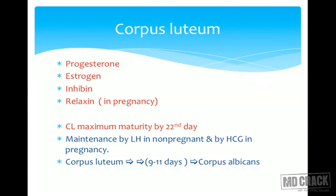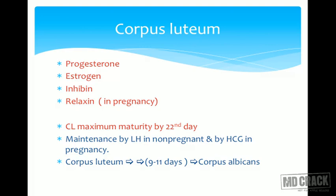The corpus luteum reaches maximum maturity by day 22 of a 28-day regular cycle — 7 to 9 days after ovulation, with the peak on day 22. The corpus luteum is maintained in the non-pregnant female by LH levels. If the female conceives, maintenance of the corpus luteum is by hCG, and the corpus luteum keeps secreting progesterone until the placenta takes over at around 12 to 14 weeks. After 9 to 11 days it forms into corpus albicans, and at around 14 days it starts degenerating.